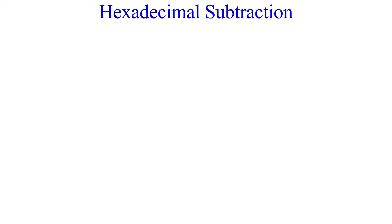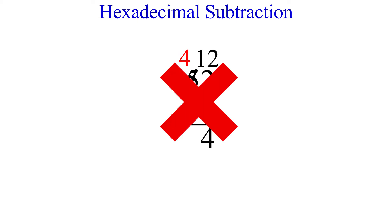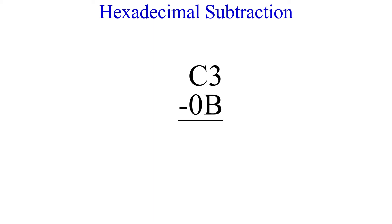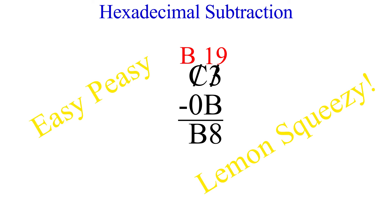We can also just subtract the two hex numbers directly, like in decimal subtraction. The key difference is that when the top digit is smaller than the bottom, we borrow 16 — not 10 — from the next place value. For C3 minus 0B: B (11) is bigger than 3, so C becomes B and we borrow 16, making 19. 19 minus 11 is 8. Then B minus 0 is B. The answer is B8.